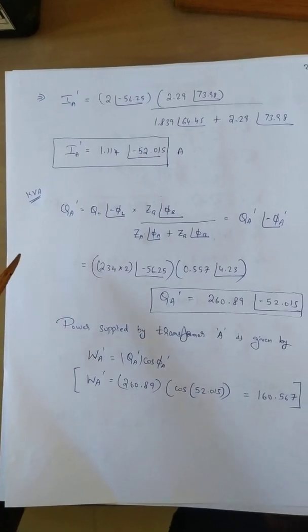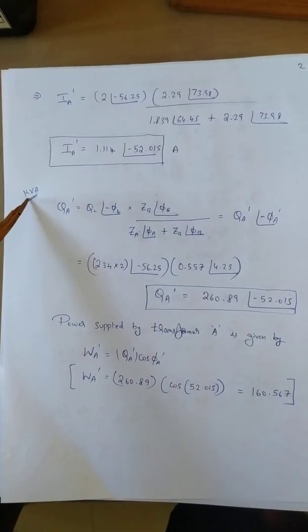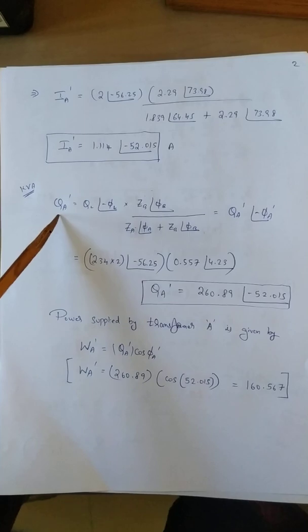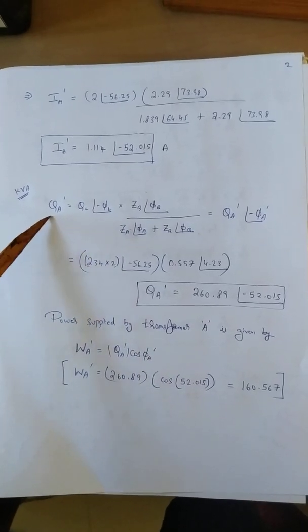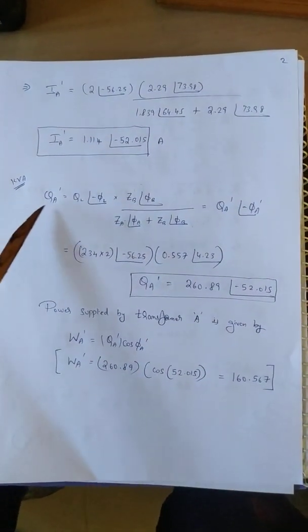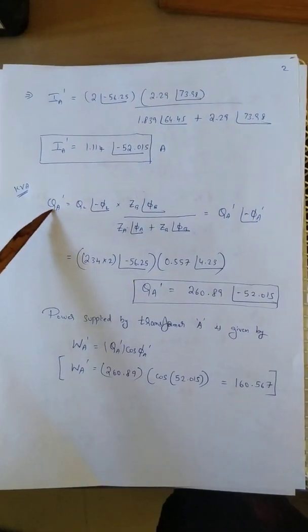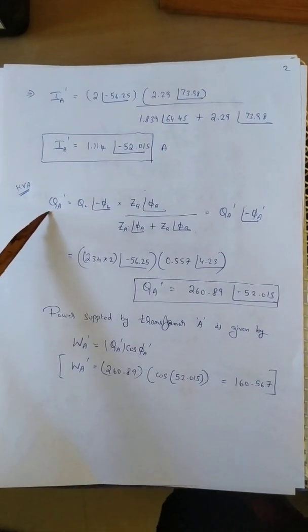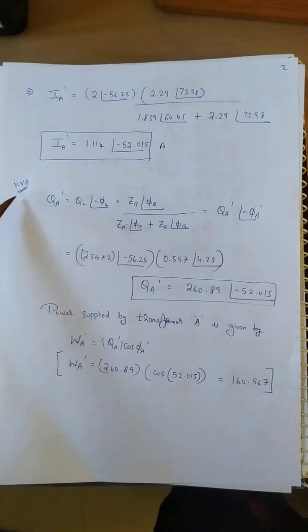Generally the notation for kVA is S, but here we have used Q for denoting kVA. Usually Q is a standard symbol used for representing reactive power which is kVAr, but here we have used Q in order to denote kVA for our understanding.